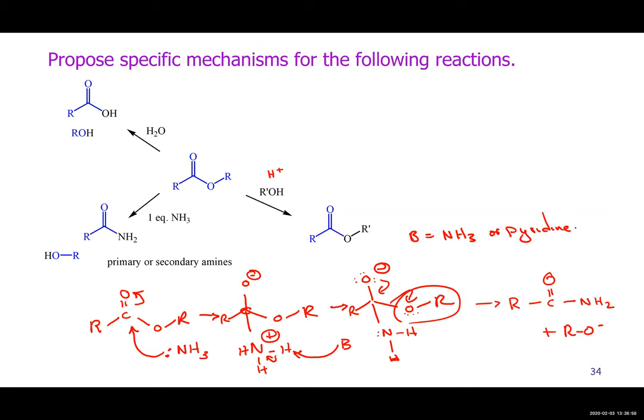If you use an alcohol reacting with the ester, you still have a protonation here — this will just be an oxygen with an R group on it. You have to deprotonate and move on. If you use water, you'll have an oxygen with two hydrogens and a positive charge that you have to deprotonate and move on.